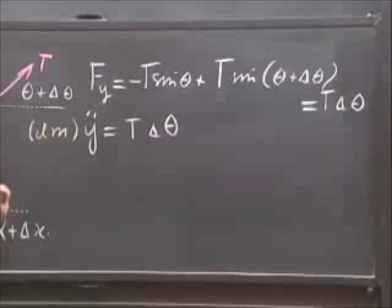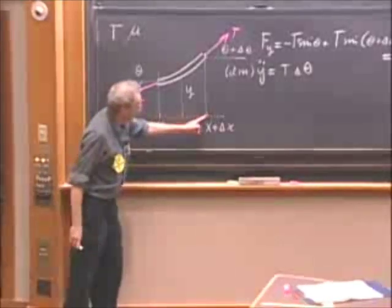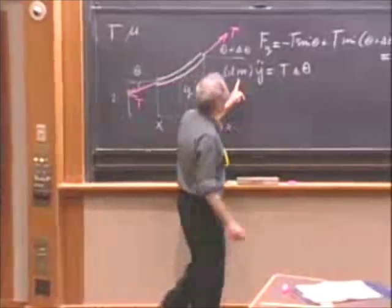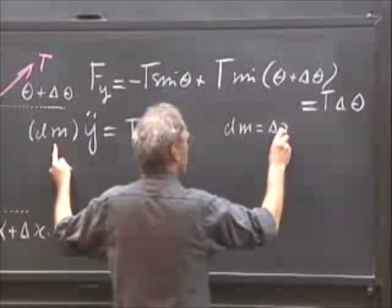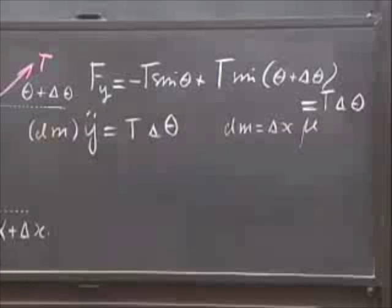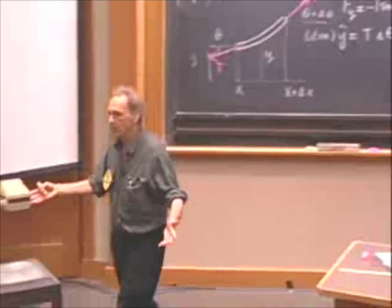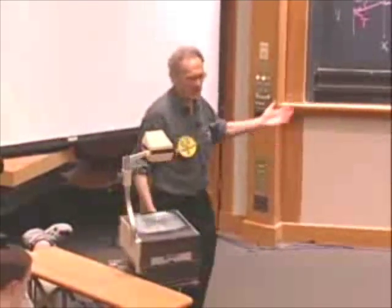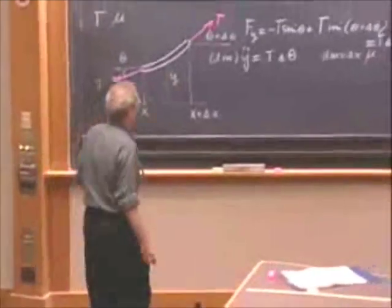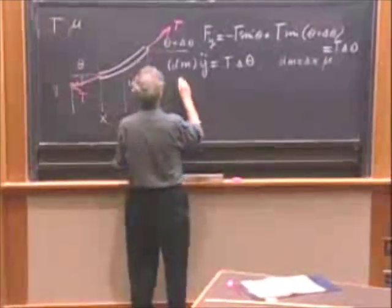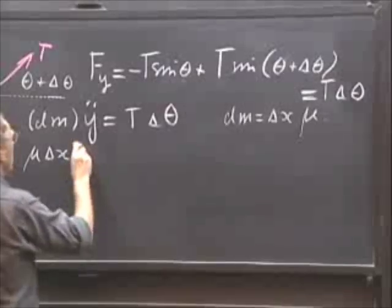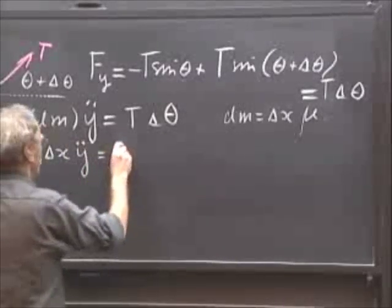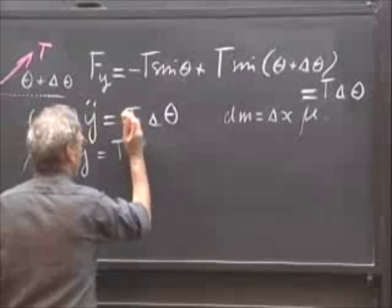But what is dm? Well, we know that the length of the string is delta x. So dm must be delta x times mu because mu is the amount of mass per unit length. And if my length is delta x, then dm is mu delta x. So I can write this now as delta x times mu times y double dot equals T times delta theta.